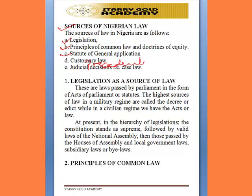Now let's examine them one by one. What is legislation? Legislation in Nigeria today refers to laws made by the National Assembly, which comprises the House of Representatives and the Senate — the Senate being the upper chamber and the House of Representatives being the lower house. Together, these bodies make laws that serve as legislative instruments to govern Nigeria. At the state level, we have state laws made by the state house of assembly, and the third tier of law-making is the bylaws made by local governments.